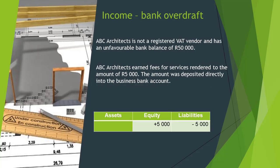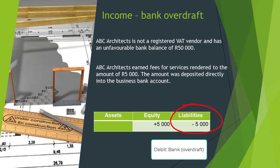If we slightly change the example to state that ABC Architects had an unfavorable bank balance, the solution will slightly change. Instead of assets increasing, we will now see a decrease on liabilities. The reason for this is that a bank overdraft is classified as a liability. A liability account decreases on the debit side. So your bank account will still be debited with the 5,000 Rand received, but it will now decrease the amount that you owe to the bank. Therefore, the accounting equation will reflect a minus 5,000 Rand under liabilities.